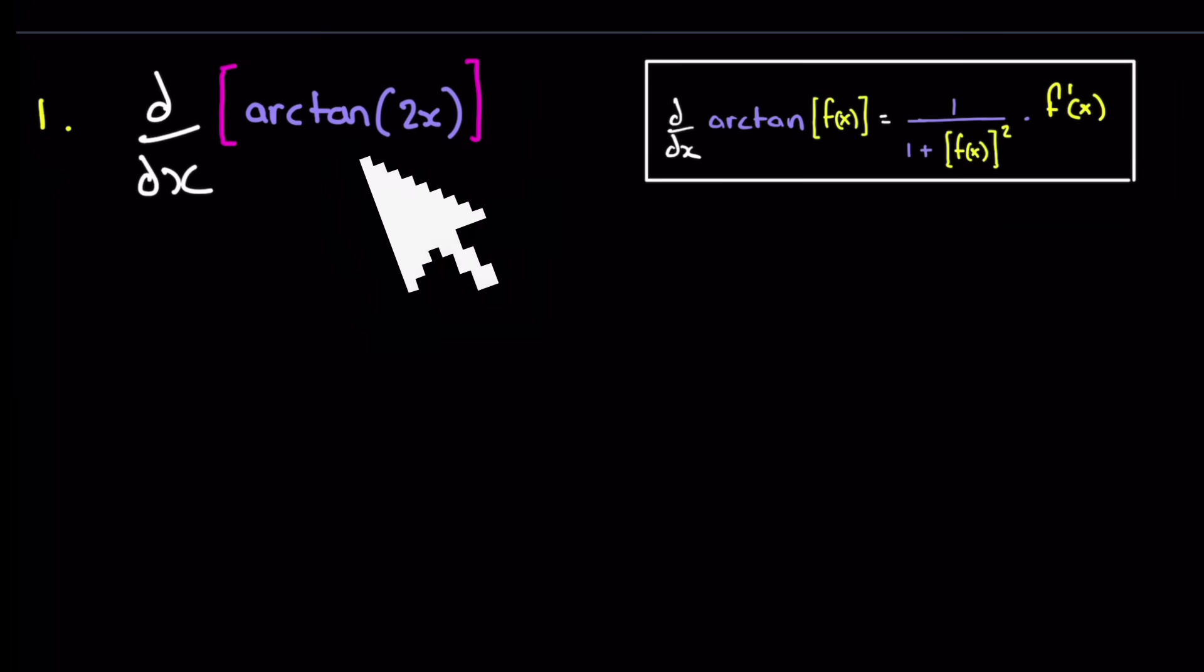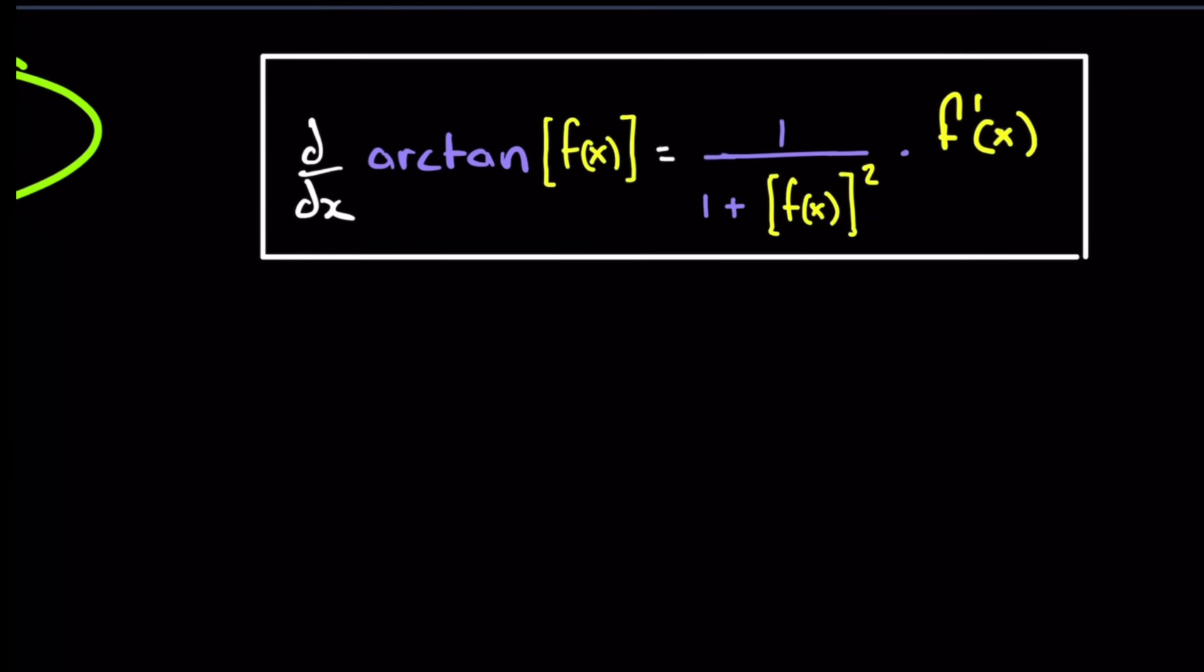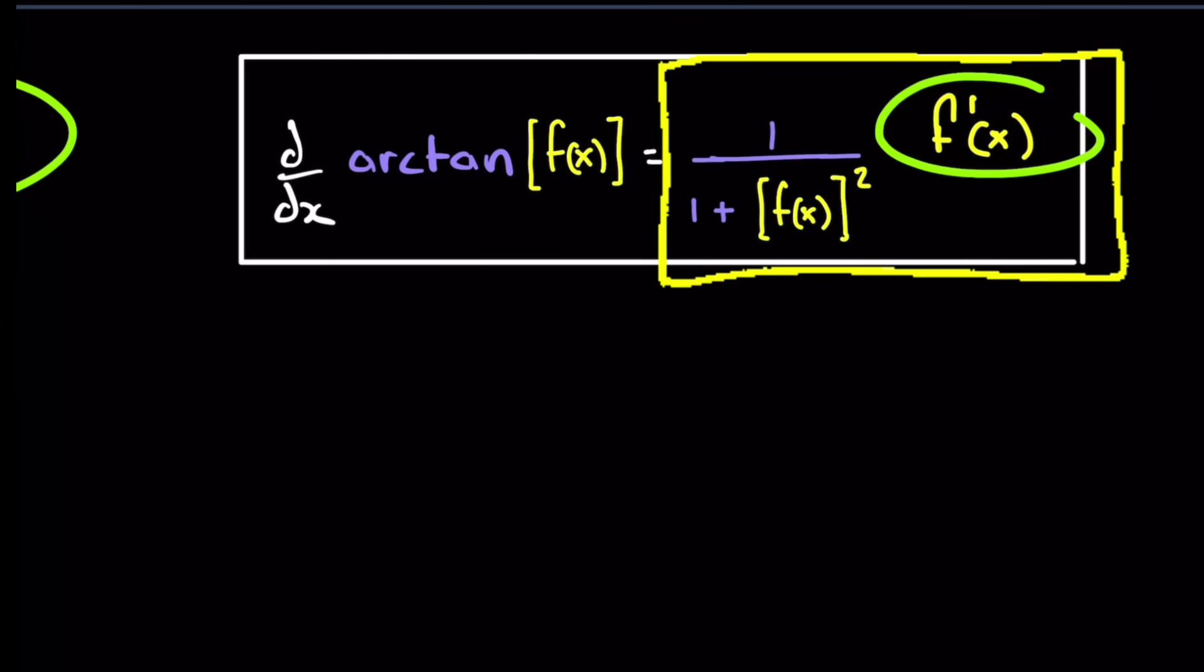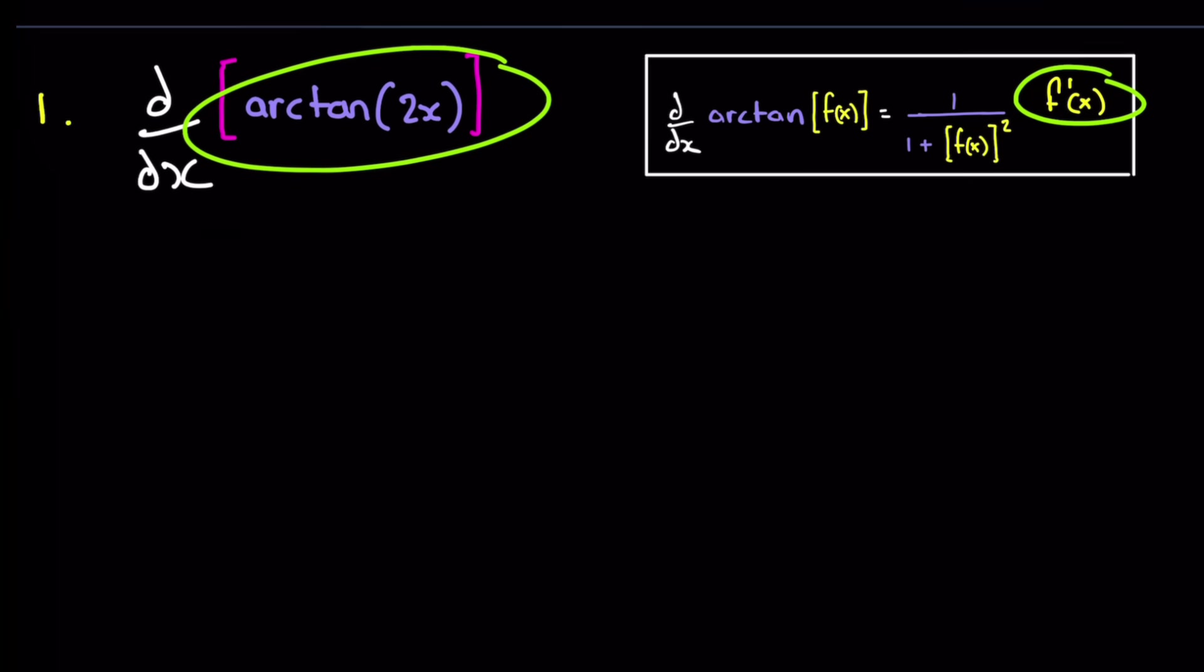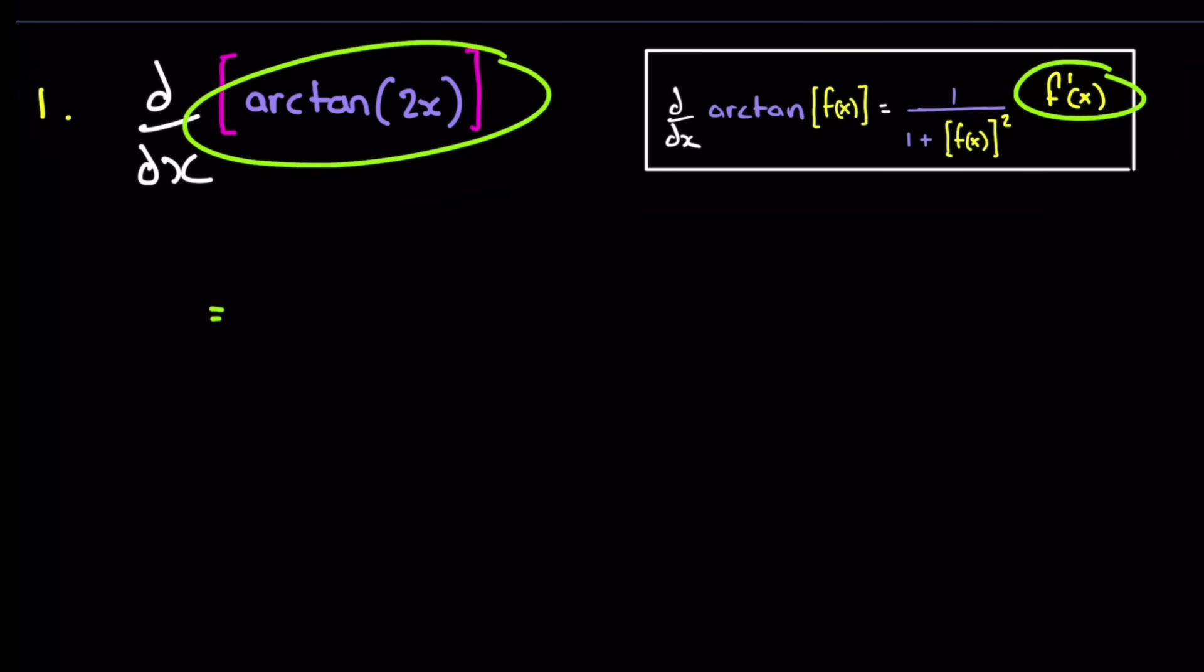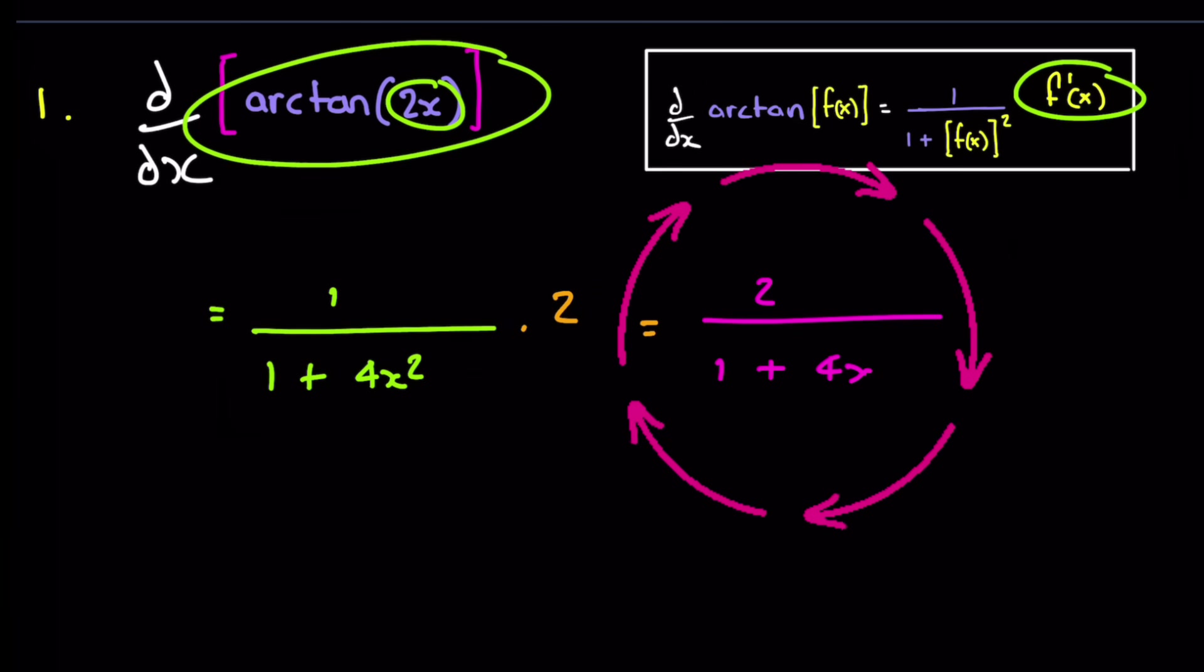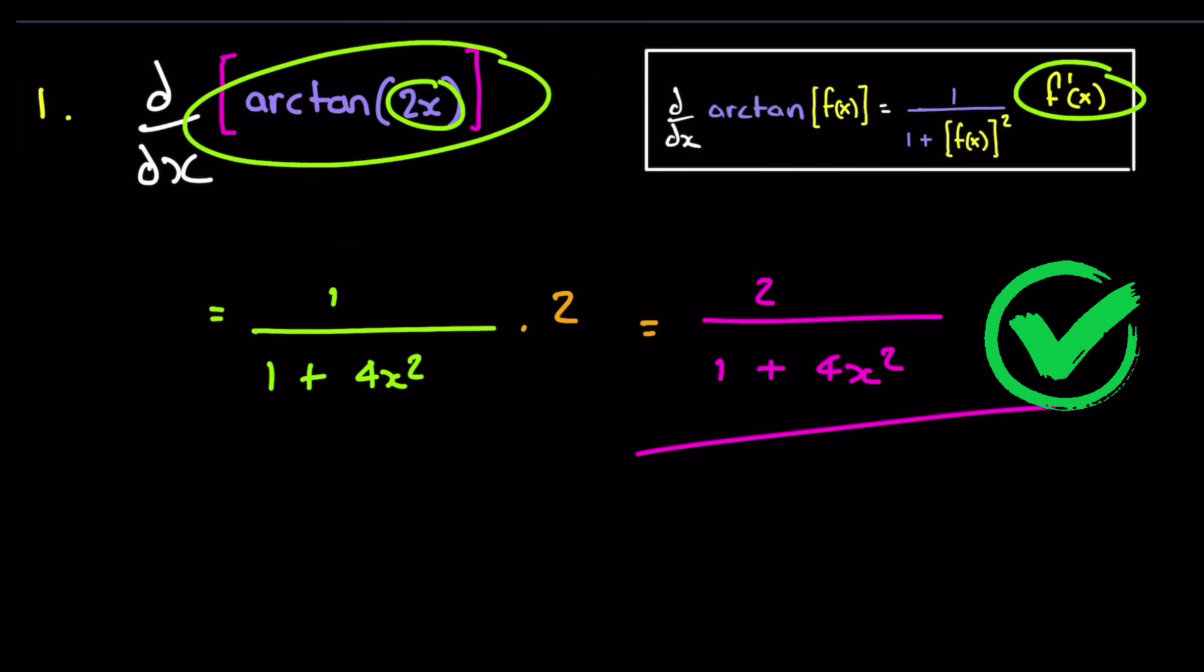Question one, differentiate arctan 2x with respect to x. So we're just going to use this on the right hand side here. Don't forget to times through by the derivative of the function, which is 2x. So therefore, we'll get 1 over 1 plus, now 2x all squared is 4x squared times by the derivative, which is 2, resulting in 2 over 1 plus 4x squared. And that is the end of question one.